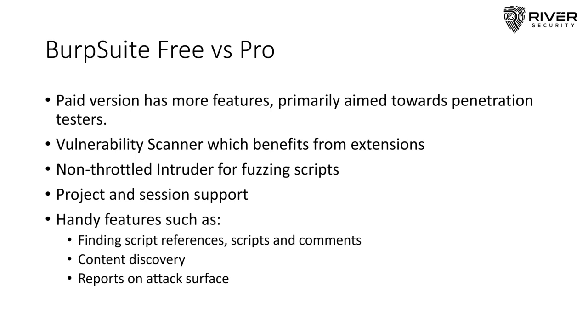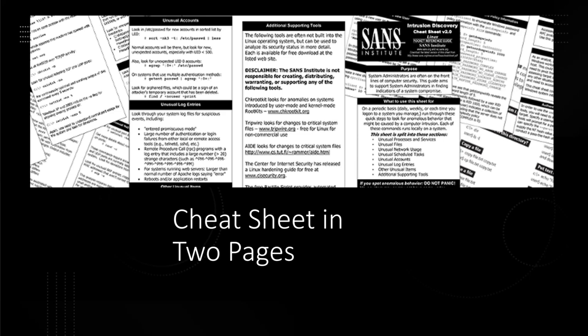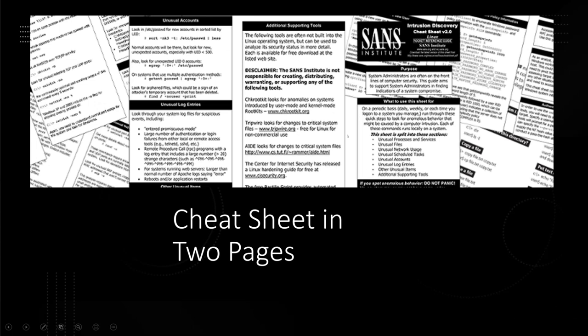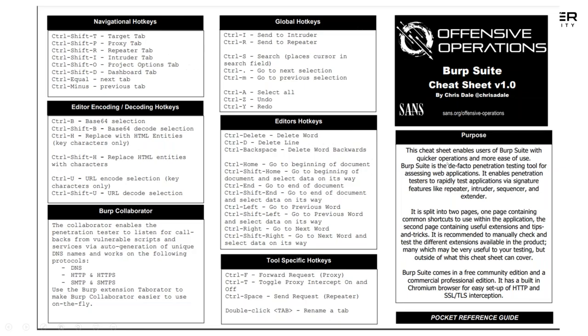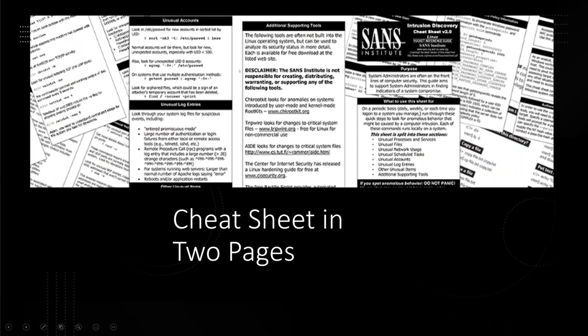This cheat sheet comes in two pages, printed in a way that allows you to trifold the paper so it's easy to carry and easy to open up and find what you're looking for. That's why there are spacers between the columns. You can see white space between the different columns, meaning you're able to fold it in a trifold.